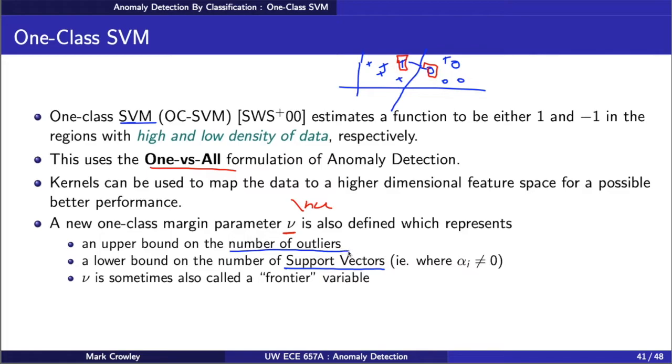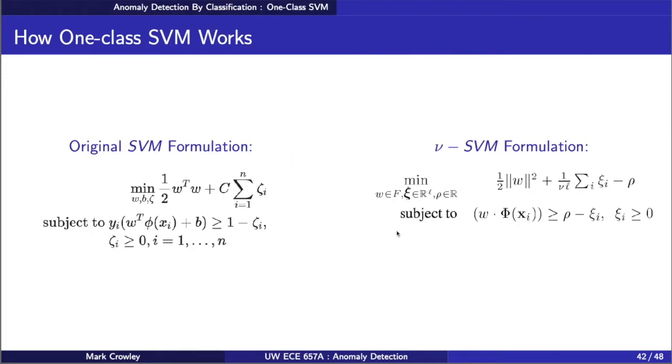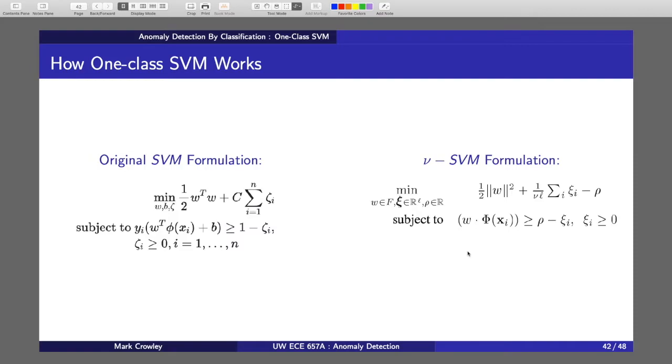Now it might not get that exactly, but that's what it's going to aim for in the optimization because that's what nu ends up being. So nu kind of defines this frontier of what normal points and abnormal points are.